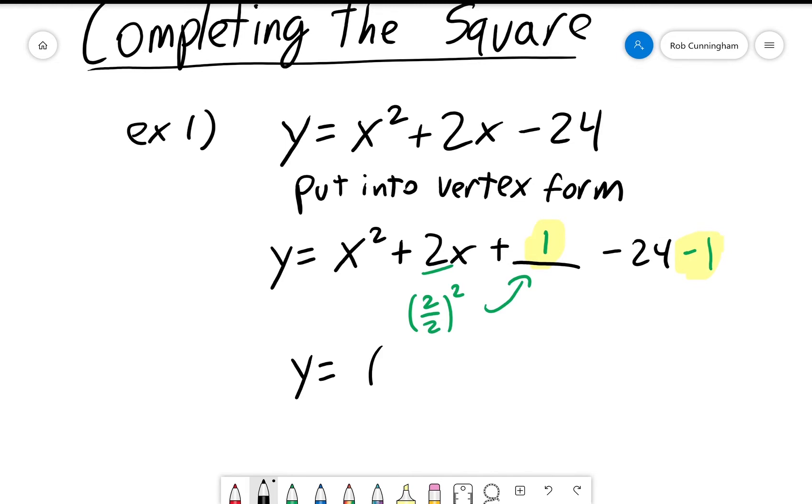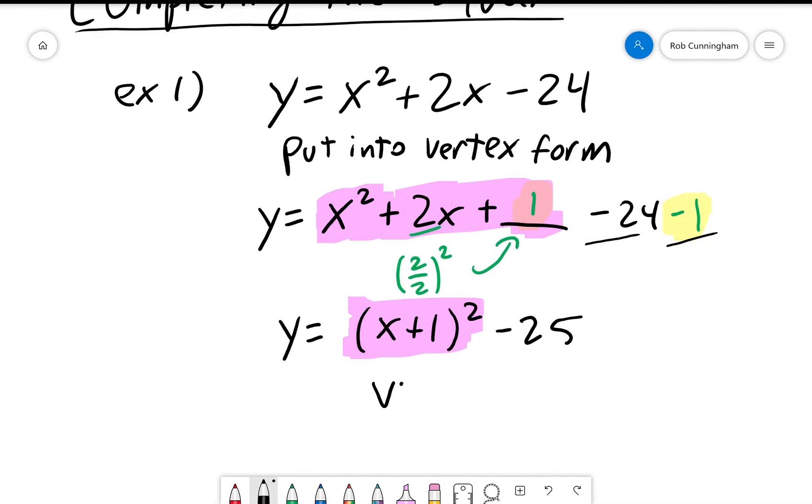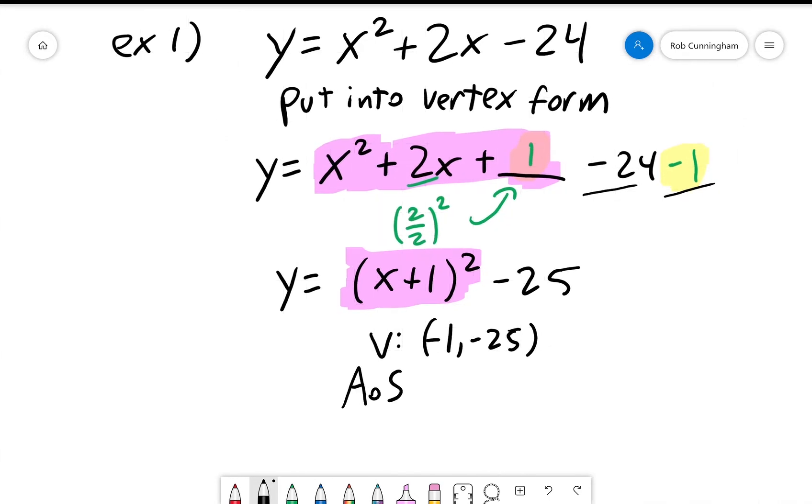We now have y equals x plus 1 squared. This entire block here factors into x plus 1 squared. And what's left? Minus 24 combines with minus 1 to make it minus 25. My vertex is negative 1, negative 25. My axis of symmetry is x equals negative 1. Let's do another one.